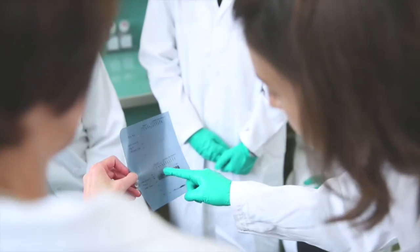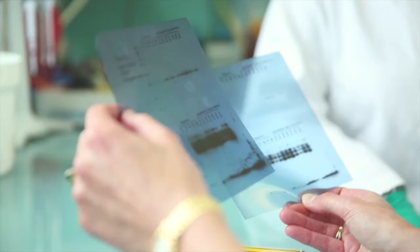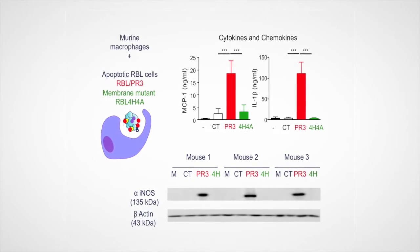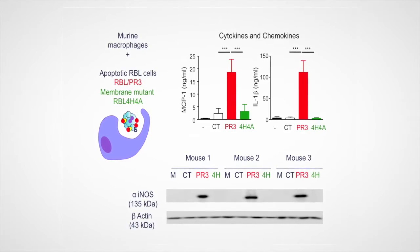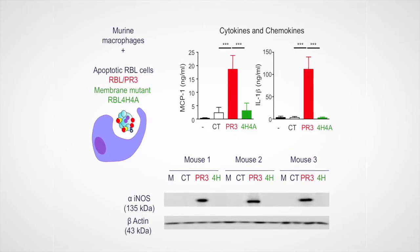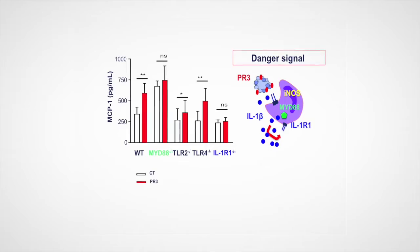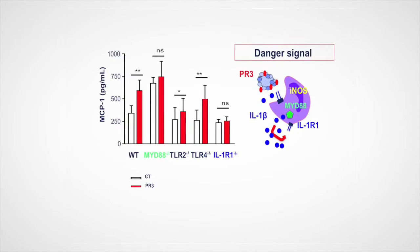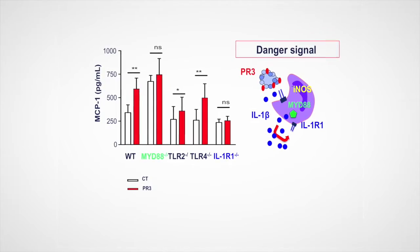A key finding in our study is that when a macrophage encounters an apoptotic cell expressing PR3, it triggers a pro-inflammatory response with the secretion of various cytokines and chemokines as well as the induction of nitric oxide synthase. Importantly, a mutant of PR3 which cannot be expressed at the membrane fails to trigger this pro-inflammatory response. By performing experiments using various knockout animals, we discovered that the MYD88 and IL-1 receptor pathway was crucial for this pro-inflammatory effect of PR3.